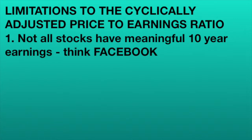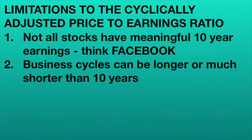The first limitation is that many stocks don't have meaningful 10-year average earnings. Think of Facebook — it wasn't even traded until 2014, so you can't really look at CAPE ratios for Facebook. The second limitation is that the length of a business cycle can be longer than 10 years or much shorter, so the CAPE can be skewed by two or three recessions in a decade — something largely possible in the next 10 years.